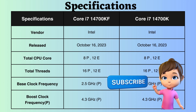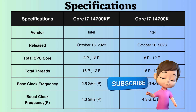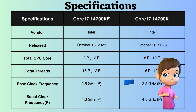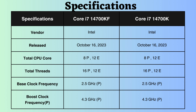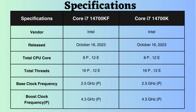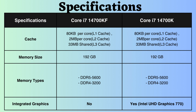Additionally, both processors have the same base clock frequency of 2.5 GHz for performance cores and a boost clock frequency of 4.3 GHz. The L1, L2, and L3 cache sizes for both processors are 80 KB per core, 2 MB per core, and 33 MB per core, respectively. High cache size aids in faster data access and reduced latency.